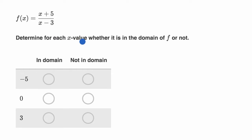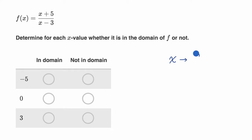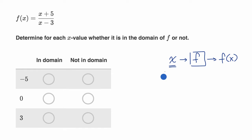We're asked to determine for each x value whether it is in the domain of f or not, and they have our definition of f of x up here. So as a bit of a review, if x is in the domain of our function, that means that if we input our x into our function, we are going to get a legitimate output f of x. But if f isn't defined at x, or if it gets some kind of undefined state, then x would not be in the domain.